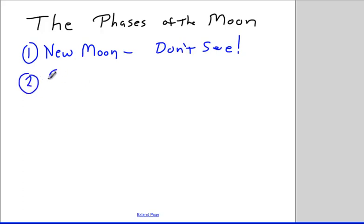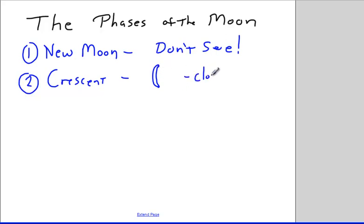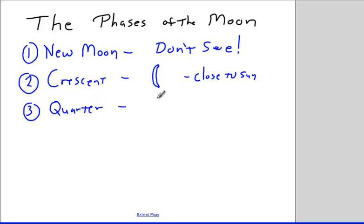Then there is also the crescent phase, which is a very thin portion of the moon — looks like a very thin moon. That's when the moon is close to the sun but far enough away that we can see a little bit. Then we have the quarter phase, which can be first quarter or third quarter, and that's essentially a half moon — we see half of the moon illuminated.